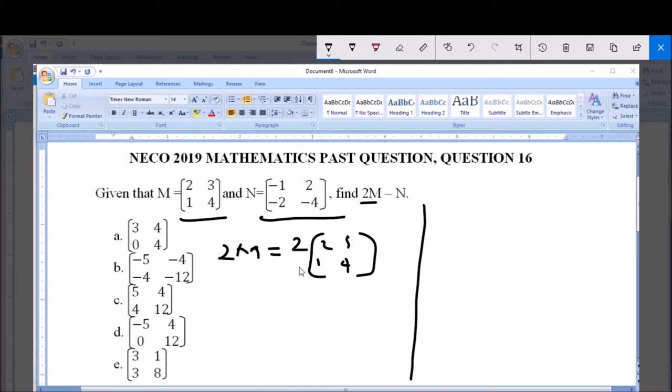So, we have 2 times 2. These 2 now multiply every member of this matrix. 2 times 1, 2 times 3, and 2 times 4. So, 2 times 2 here will give us 4. 2 times 1 will give us 2. 2 times 3 here will give us 6, and 2 times 4 will give us 8.